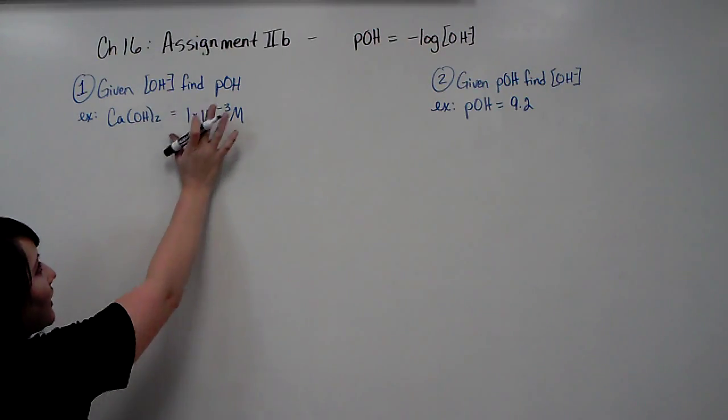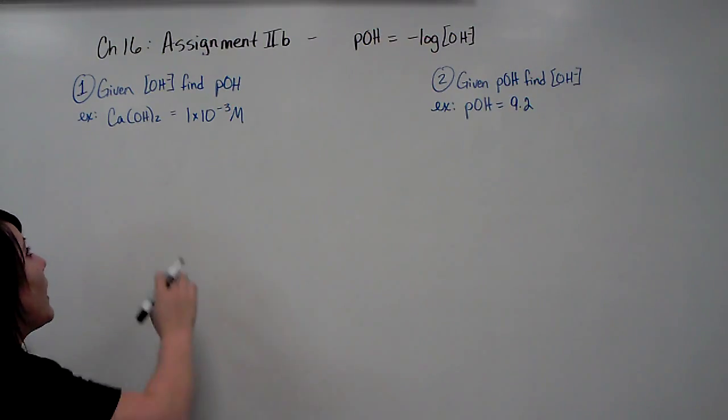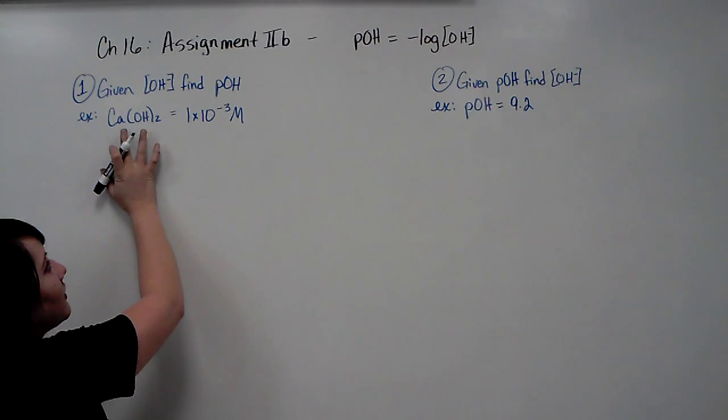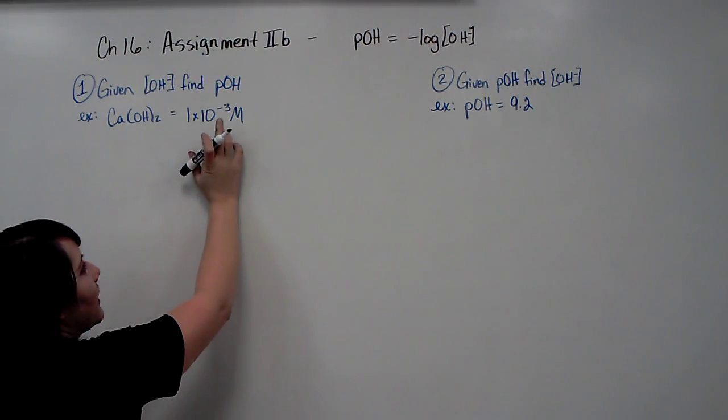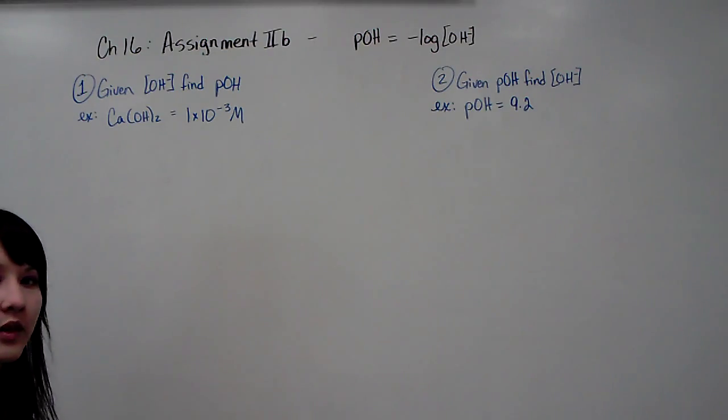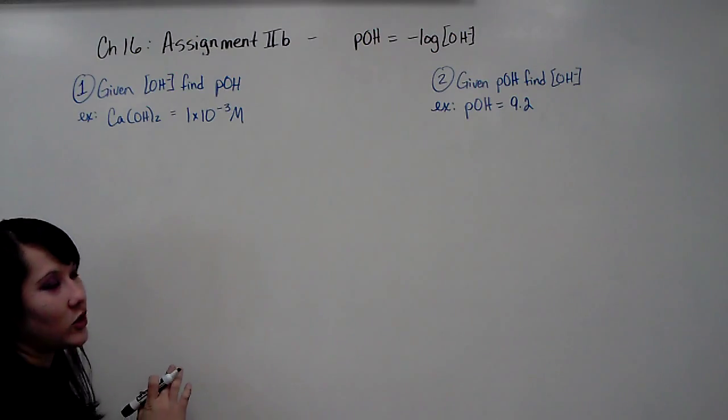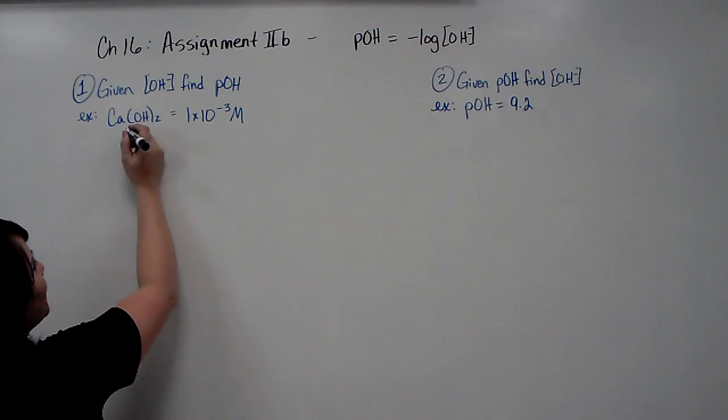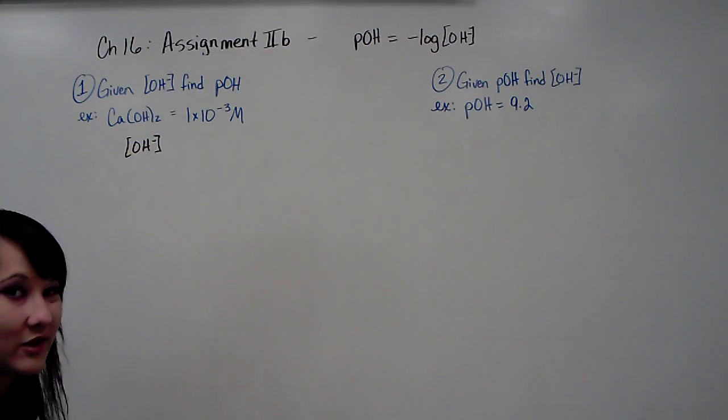If you're given hydroxide and asked to find the POH, and I threw a little curveball in here for you, I'm giving you calcium hydroxide, and I'll tell you it's aqueous, equals 1 times 10 to the negative 3 molar. This is a little bit tricky because we need the hydroxide concentration.